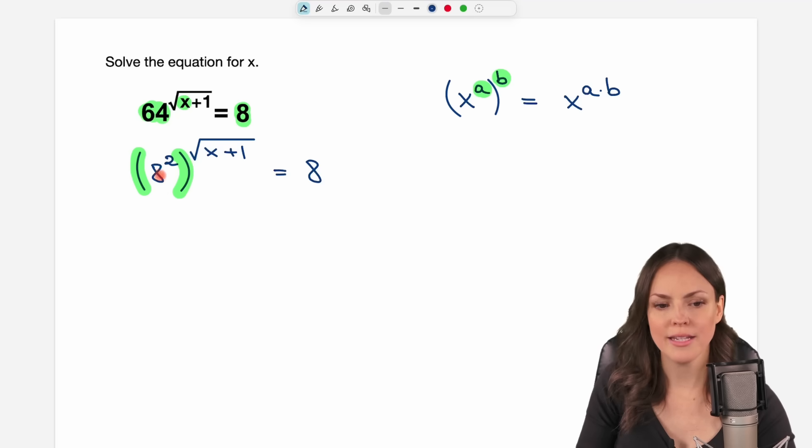Let's do this here. We take our base, the 8, and then multiply these two. We take the 2 and multiply it by our other exponent, the square root of x plus 1. On the other side we still have our 8.